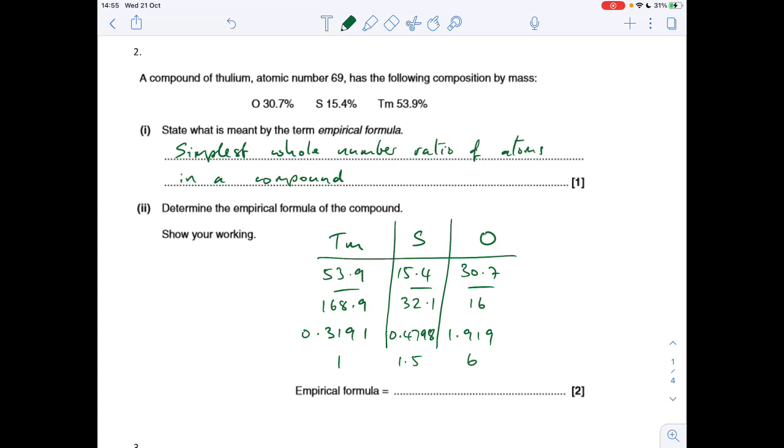Now what we can't do is just round that up to 2. We've got to multiply out until we get whole numbers. So obviously we're going to double all of these and that will turn that 1.5 into 3. So the simplest whole number ratio is Tm2S3O12.